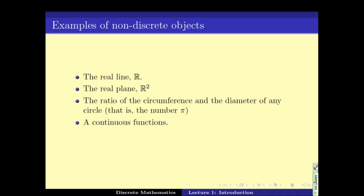Another example of a not discrete object, the continuous function. For example, a function of the form y equals x squared. These are not discrete objects.